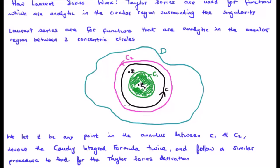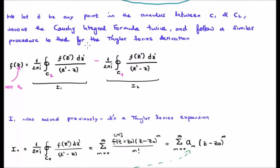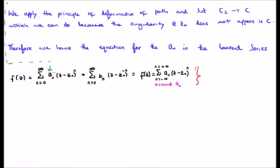If we look at contour c2 on the outside in pink and contour c1 in green on the inside — these are two contours we're using to get at the real contour c in black. By deformation of path we can shrink c2 down and let that become the integral over c. We found that the integral involving c2 is in fact a Taylor series expansion. So what we're after finding are the a_n's for the Laurent series for contour c.